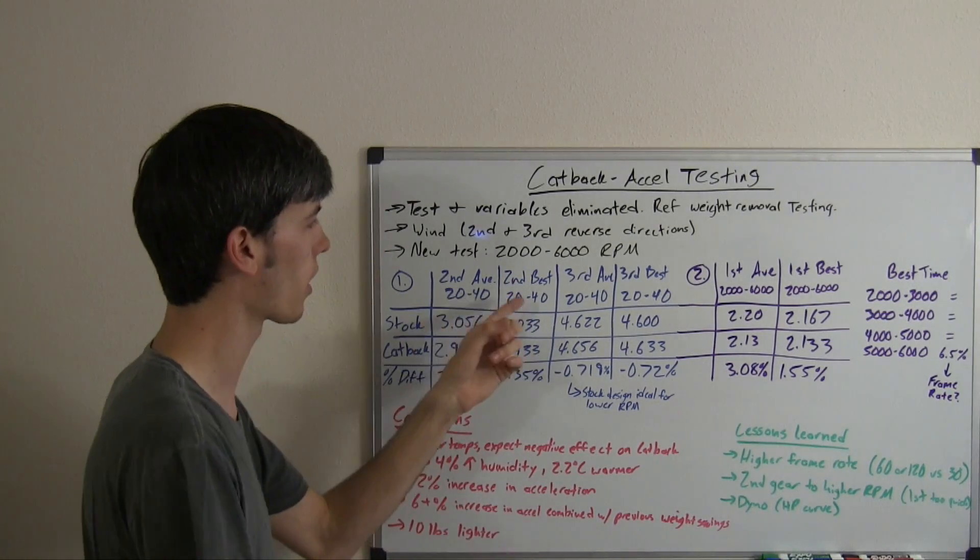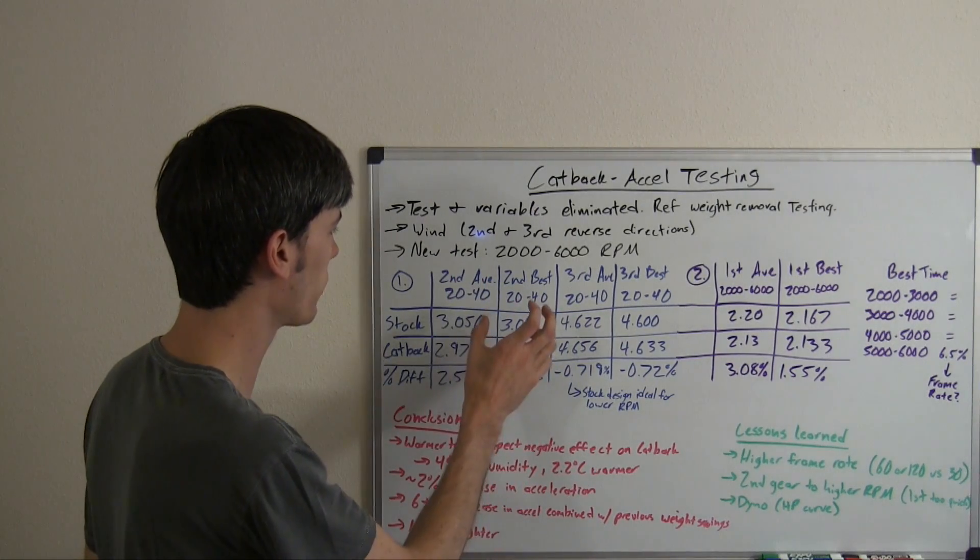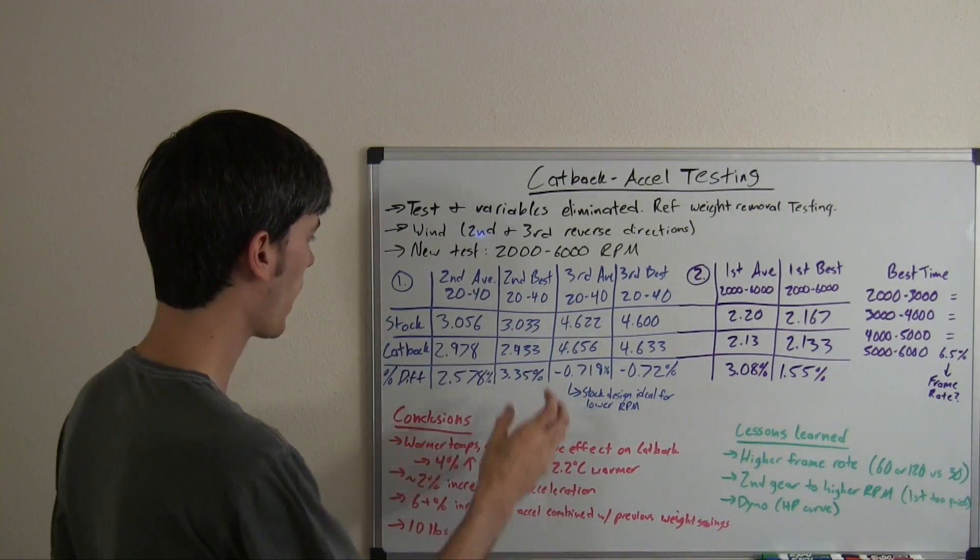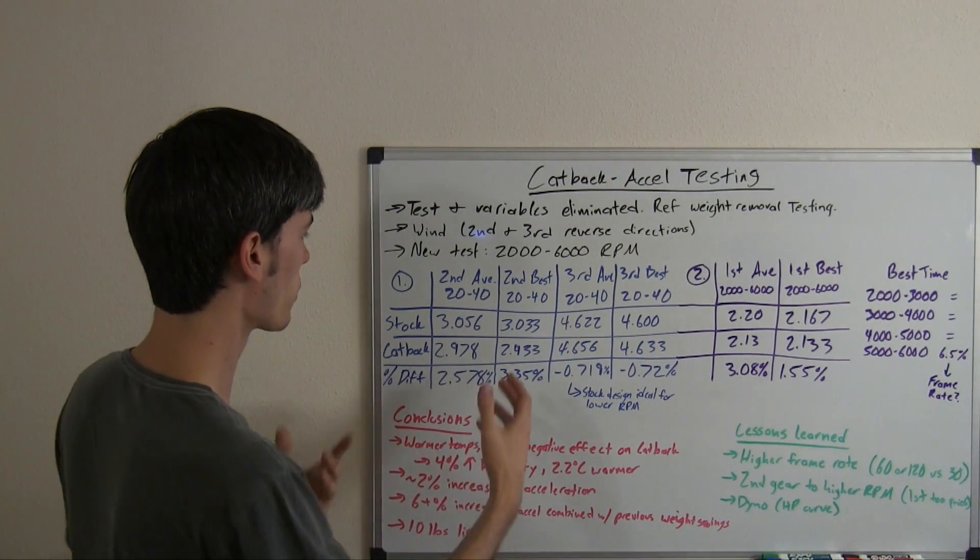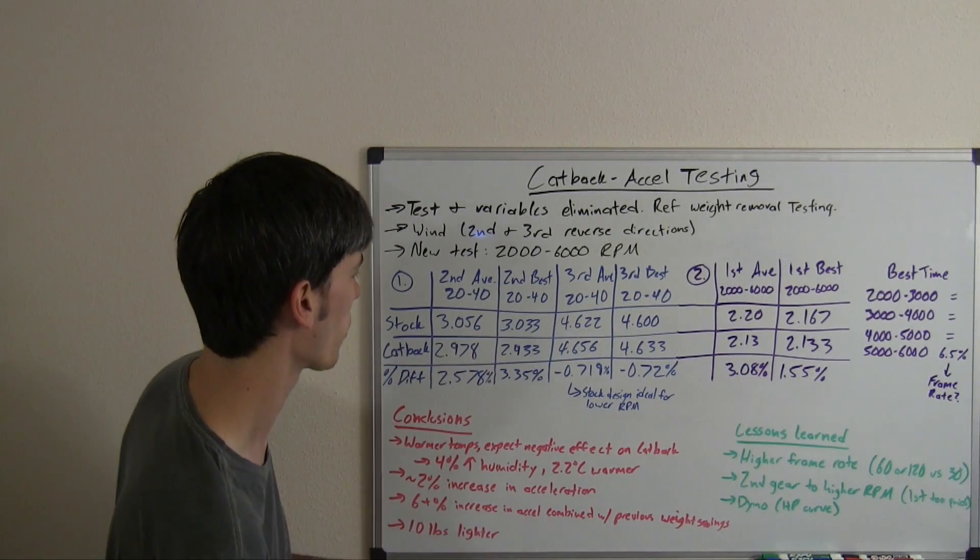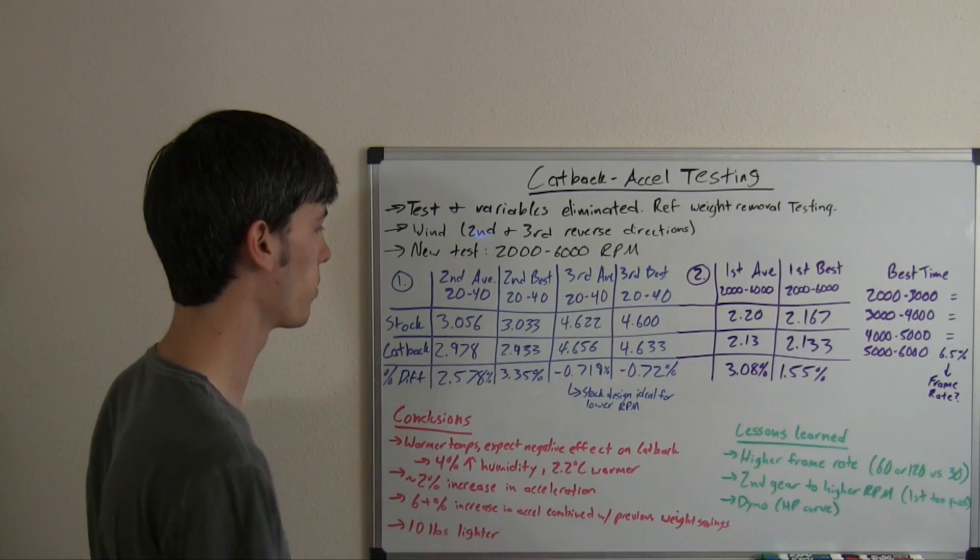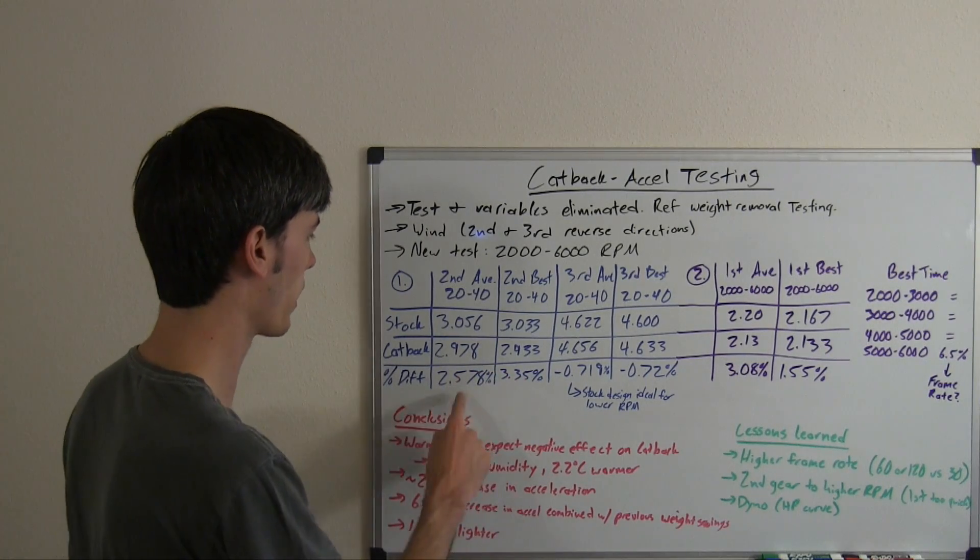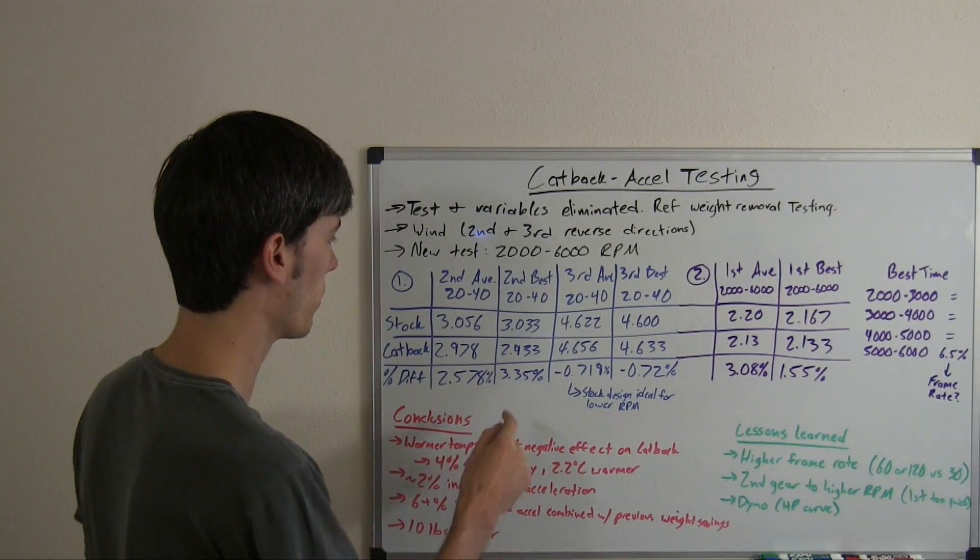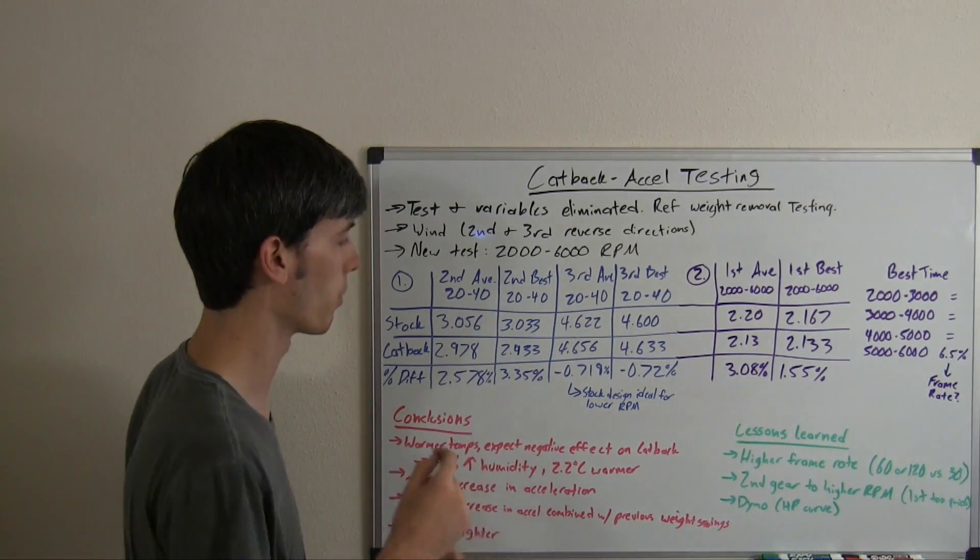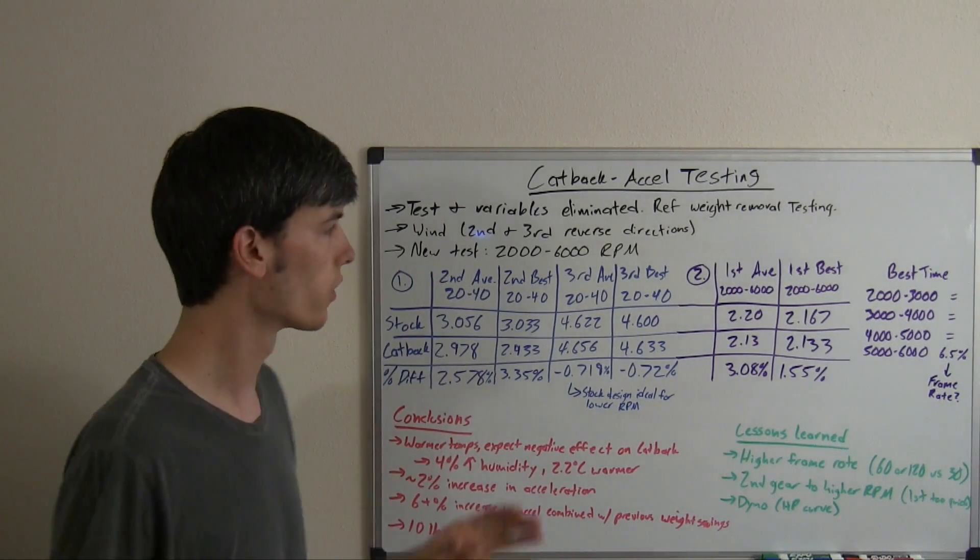I went ahead and added another column here called second best, this is the best run of the three if you combine the best of each segment and determine the percent difference. For the stock exhaust, the best time was 3.033. For the cat-back, the best time was 2.933. That gives 3.35%, which is a little bit higher than this. Conservatively, I'd just go with the lower number to say that's going to be a realistic one. But it could be possible that the best you could possibly get could be up to 3% for second gear.